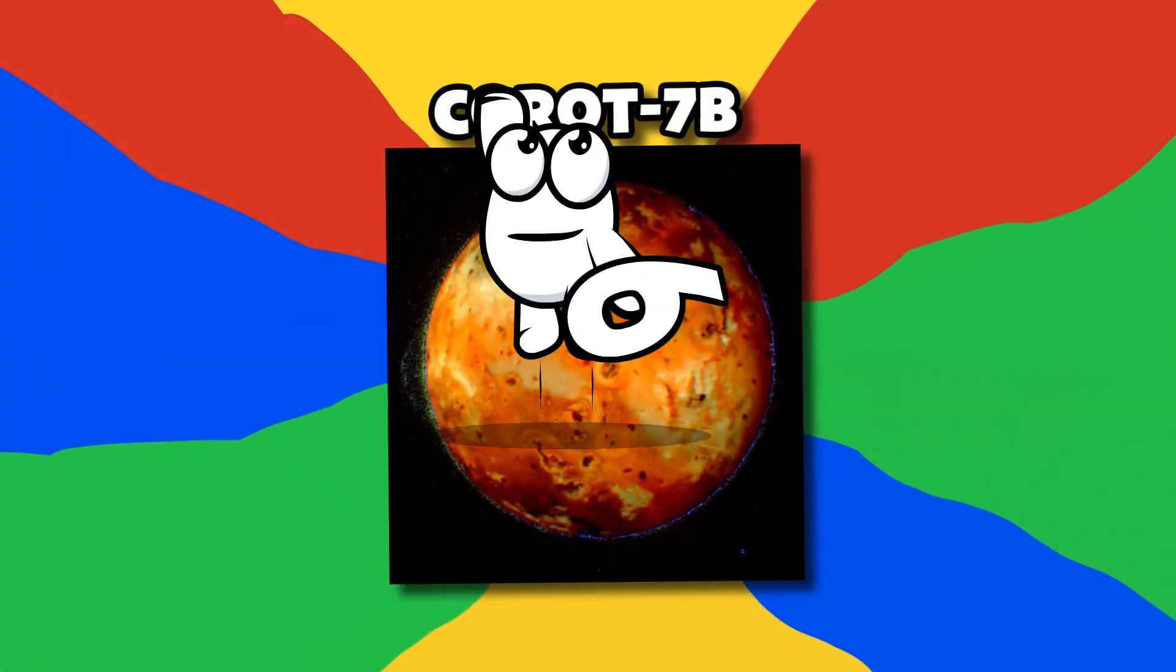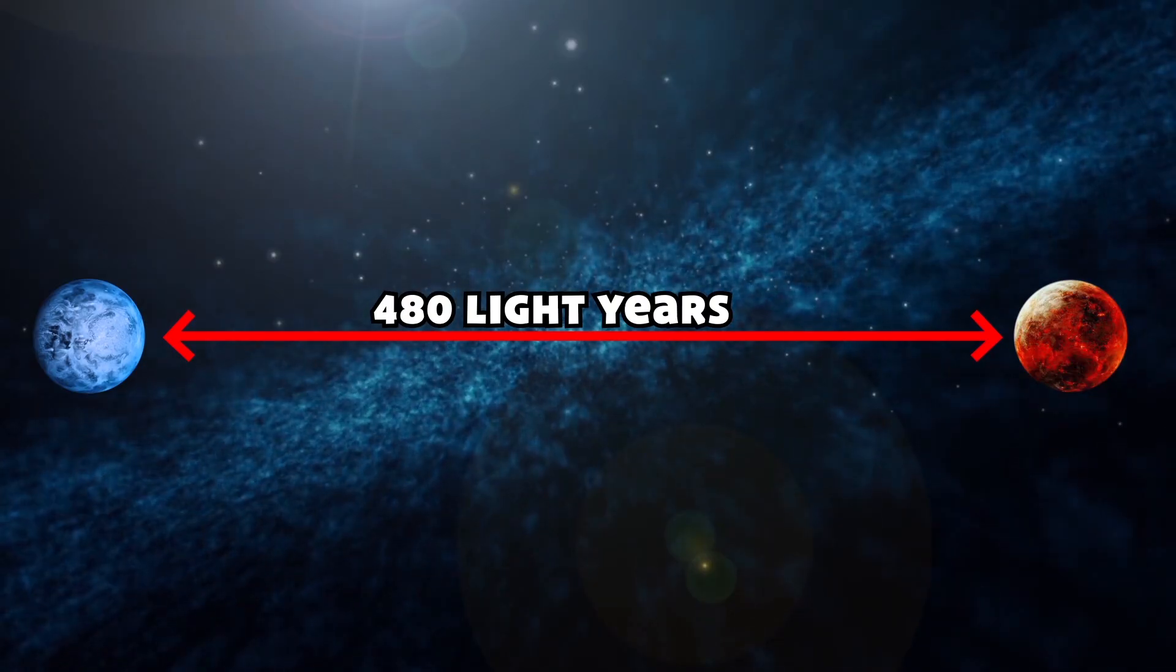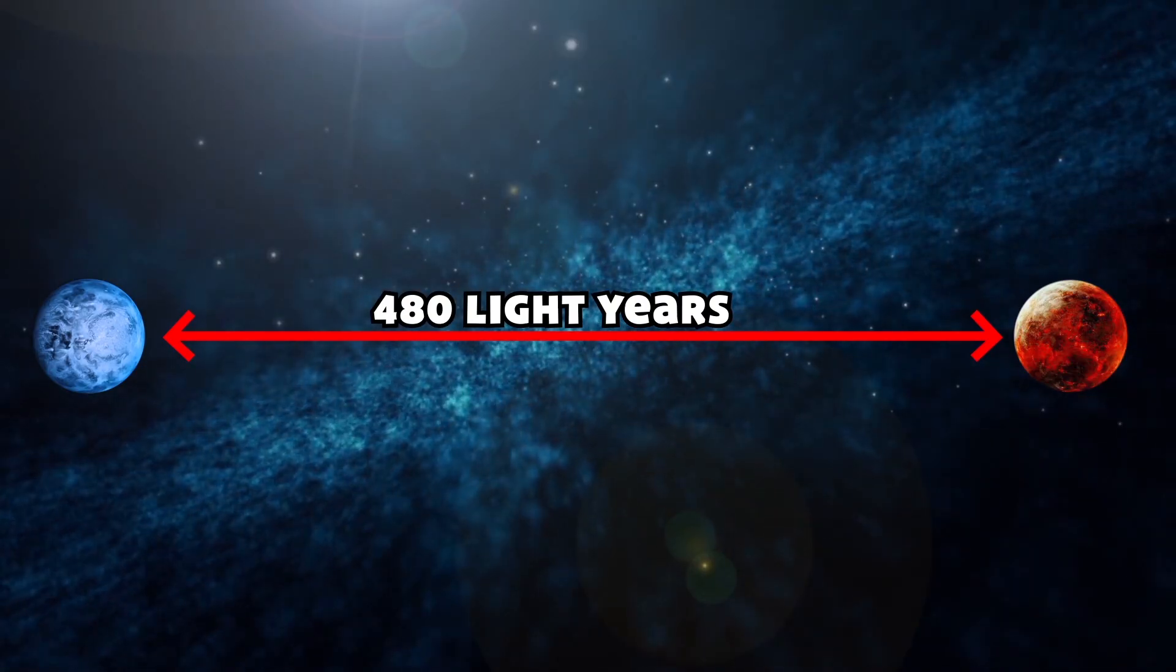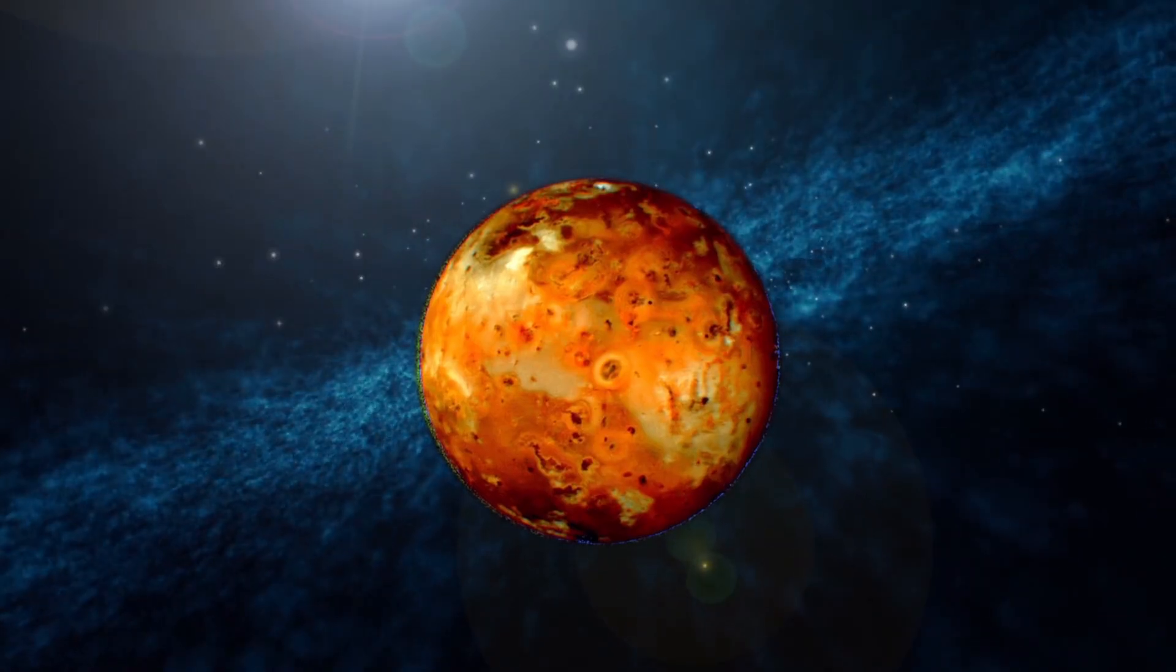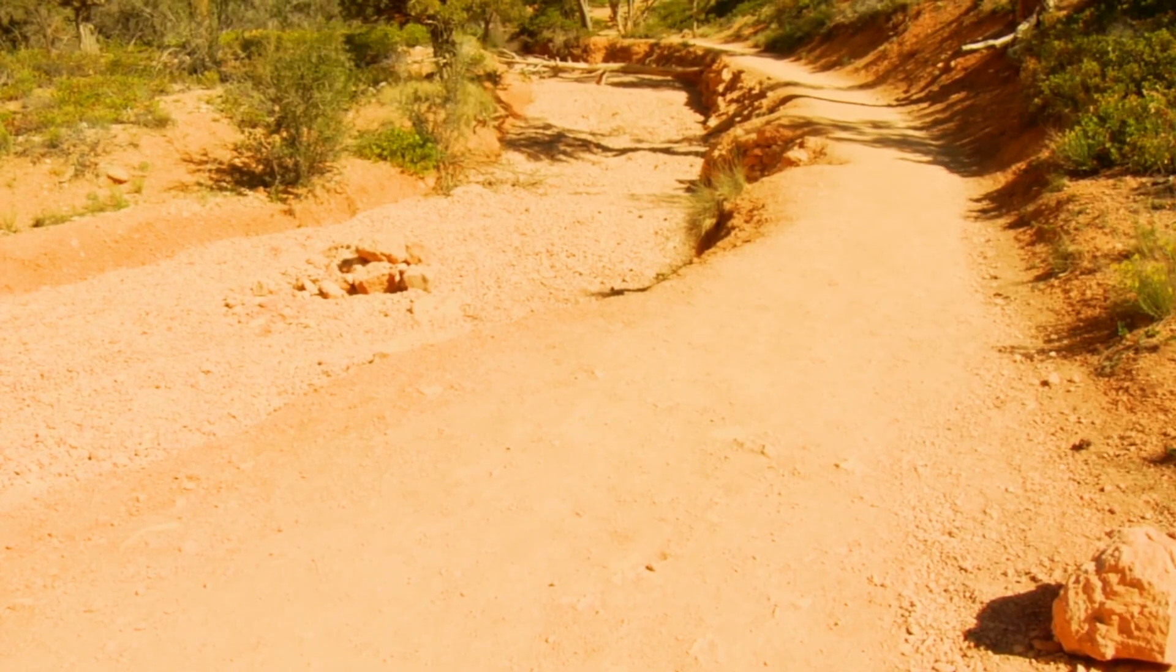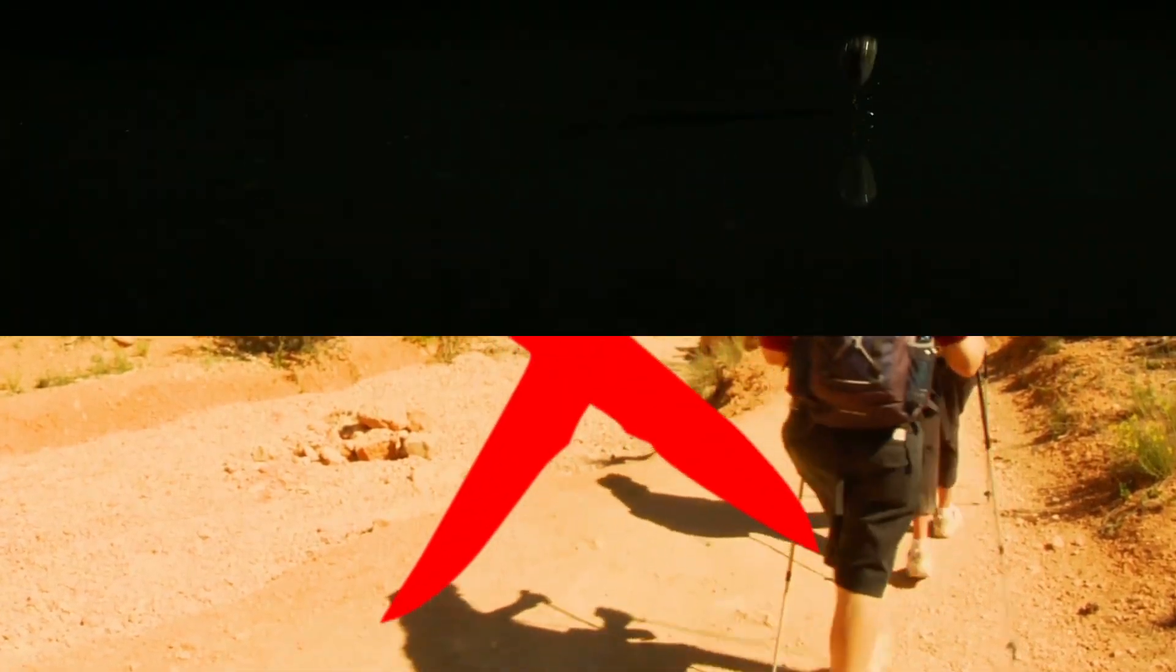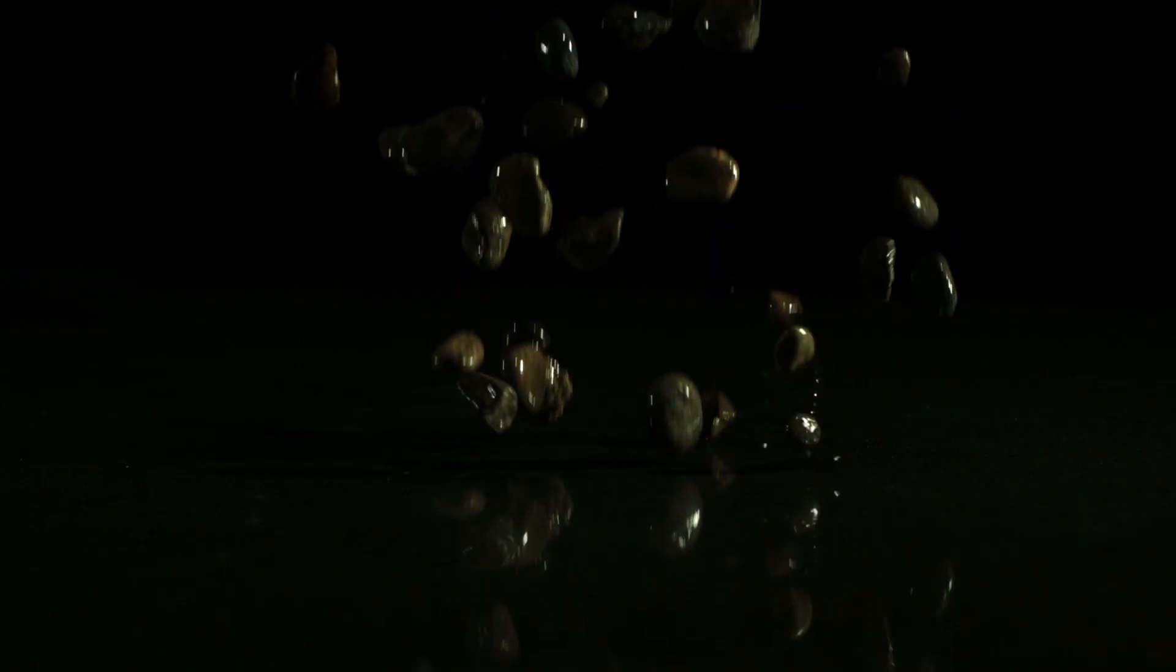Number 6, Korot-7b. Located 480 light-years away from Earth, the exoplanet Korot-7b is one of the few planets in the universe that could possibly harbor life due to the planet's Earth-like composition. However, it's still not possible for us humans to live on this planet. The reason? It rains solid rocks.